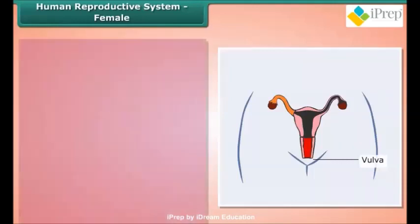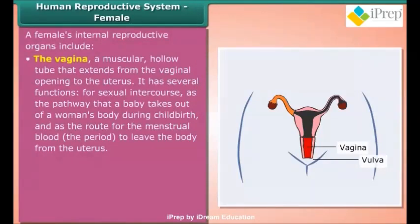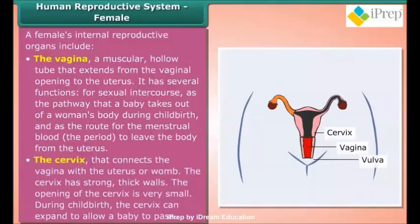A female's internal reproductive organs include the vagina, a muscular hollow tube that extends from the vaginal opening to the uterus. It serves several functions: as the pathway for sexual intercourse, as the route a baby takes out of a woman's body during childbirth, and as the route for menstrual blood to leave the body. The cervix connects the vagina with the uterus; it has strong thick walls and can expand during childbirth to allow a baby to pass.